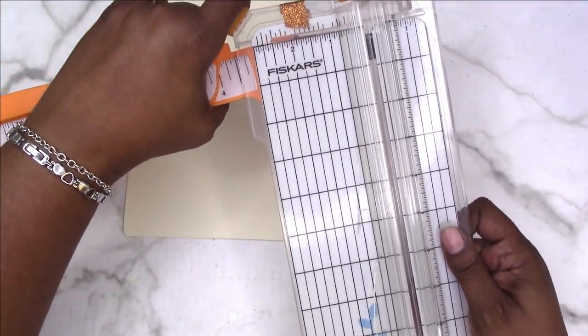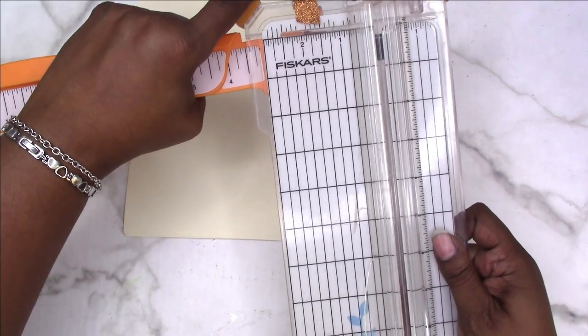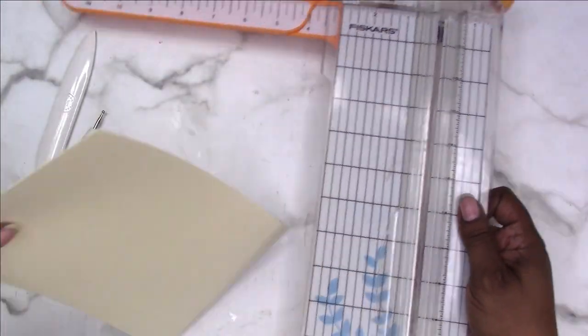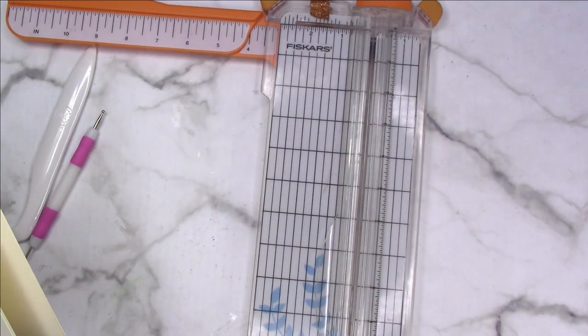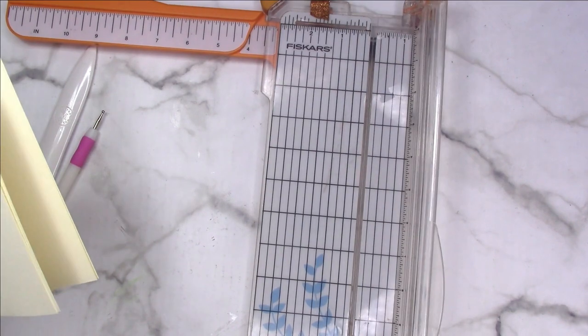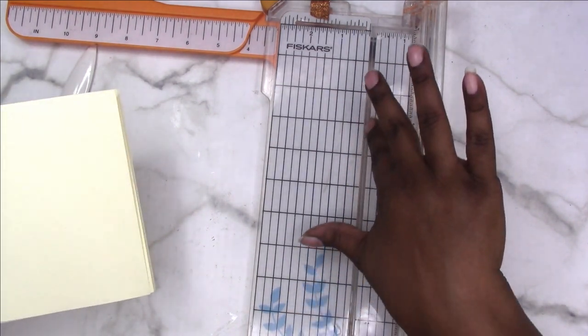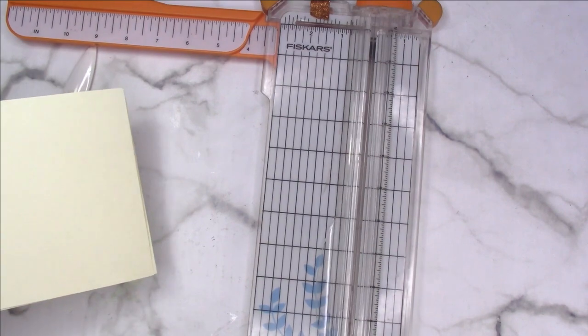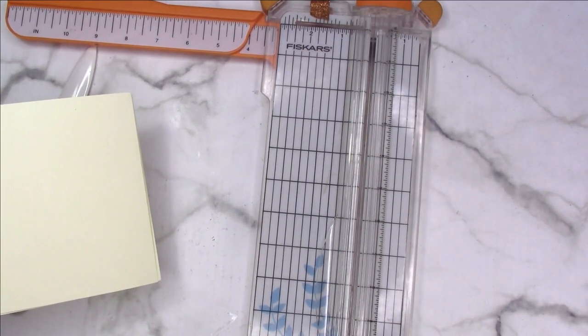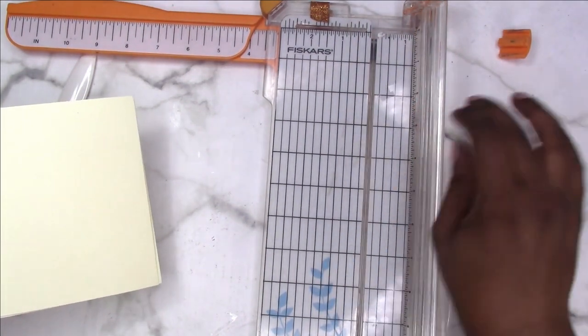To do this, I'm using my old paper trimmer. If you have a paper trimmer like this or similar—it doesn't have to be a Fiskars—and it has a groove where the blade slides back and forth, you can use it to score paper.